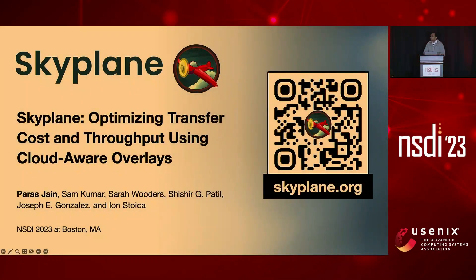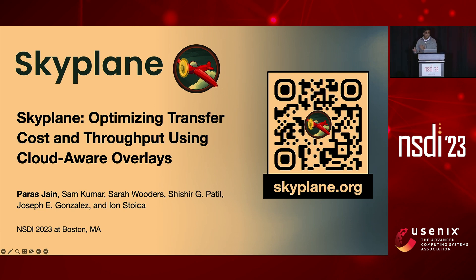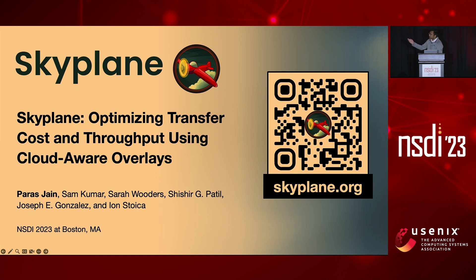Hi everyone. I'm Paras, and I'm a PhD student at UC Berkeley at the Sky Computing Lab. I'm here today to discuss Skyplane, which is our approach to mitigate data gravity bottlenecks in the cloud. Skyplane is a system to provide high-throughput and low-cost bulk data transfers between regions in a single cloud provider and between regions across cloud providers. It's an open-source project available at skyplane.org.